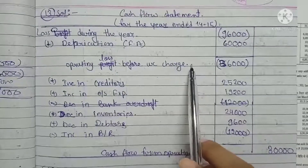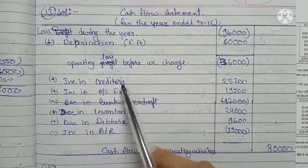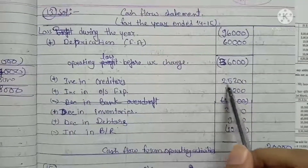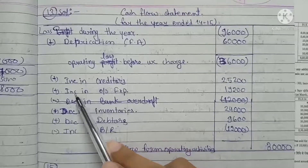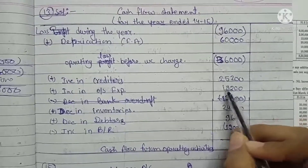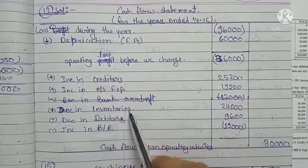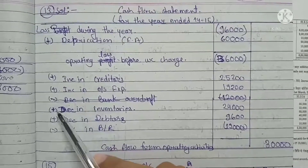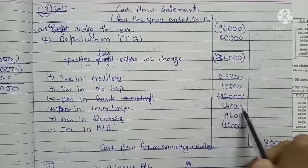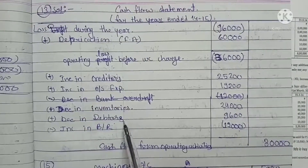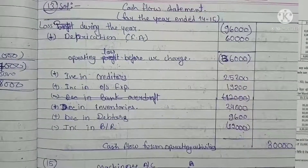Now for working capital adjustments: Creditors are a current liability and have increased, so we add Rs. 25,200. Outstanding expenses are also a current liability and have increased, so we add Rs. 19,200. Inventory is a current asset and has decreased, so we add Rs. 24,000. Debtors are also a current asset and have decreased, so we add Rs. 9,600.